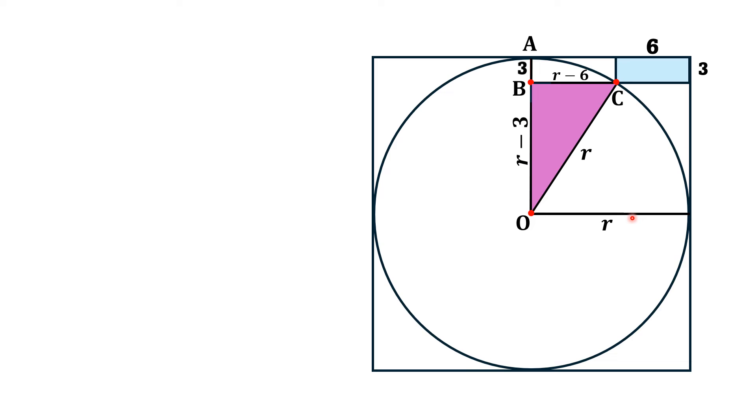Using Pythagorean theorem on this right triangle, we have OC is the hypotenuse, OB and BC are the legs. So OC² = OB² + BC². OC is radius r, OB is r - 3, and BC is r - 6.